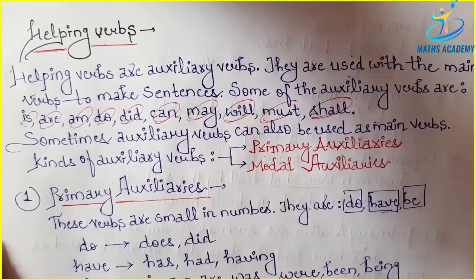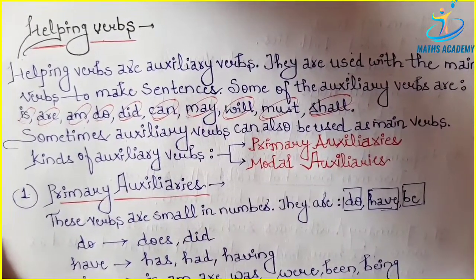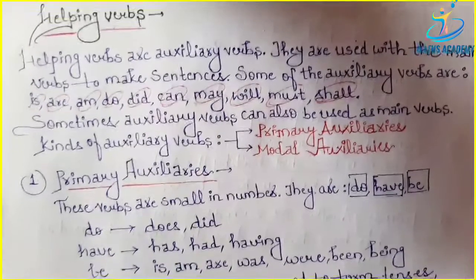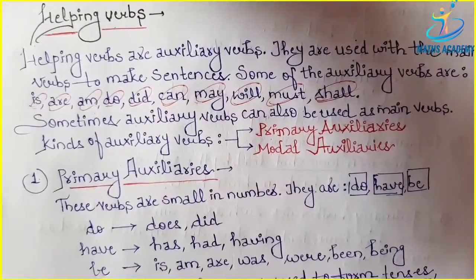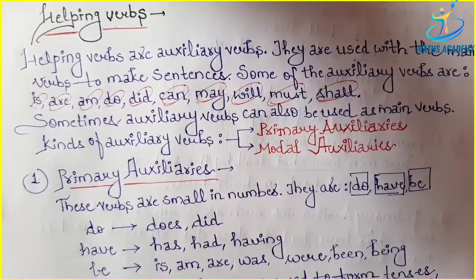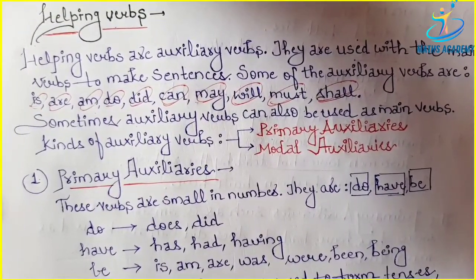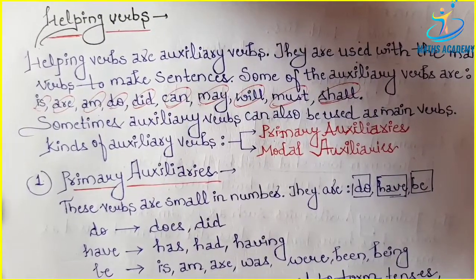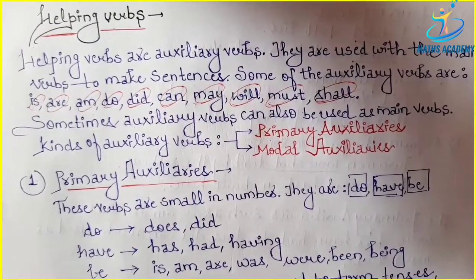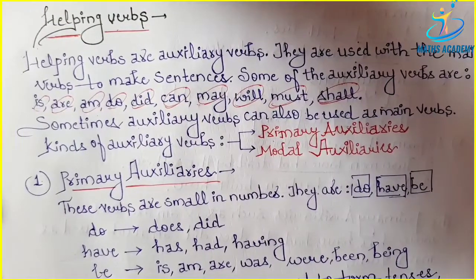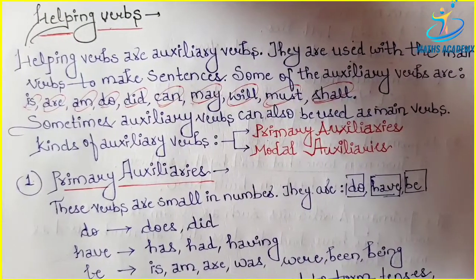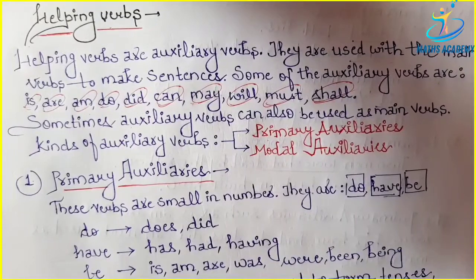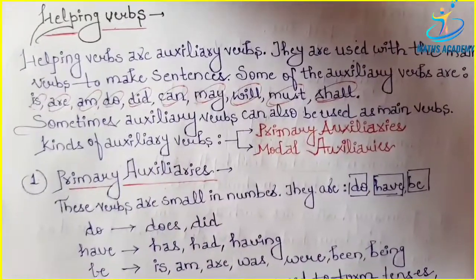Now, sometimes auxiliary verbs can also be used as the main verbs. Auxiliary verbs ka matlab hai ki helping verbs — verbs that are used with the main verbs to form sentences. Toh kabhi-kabhi helping verbs main verbs ke saath bhi use hoti hai.